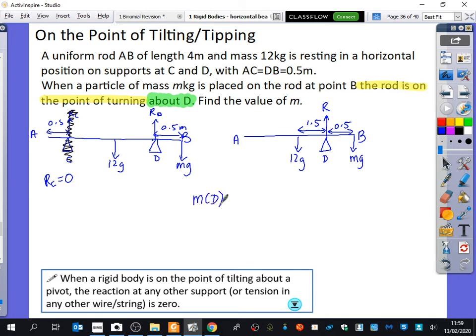So I'm just going to do 12G times 1.5 equals 0.5 MG. So I get, cancelling the Gs out, I get 12 times 1.5 is 18. 18 equals 0.5M. So M is 36 kilograms.